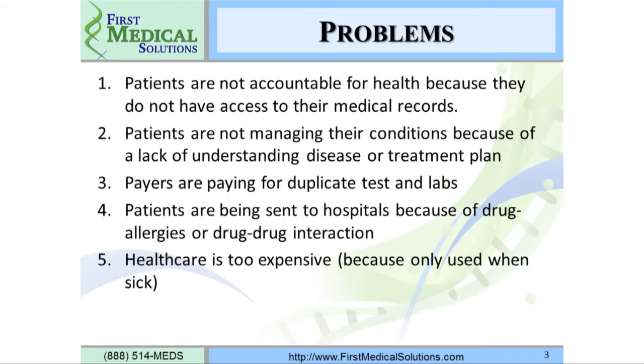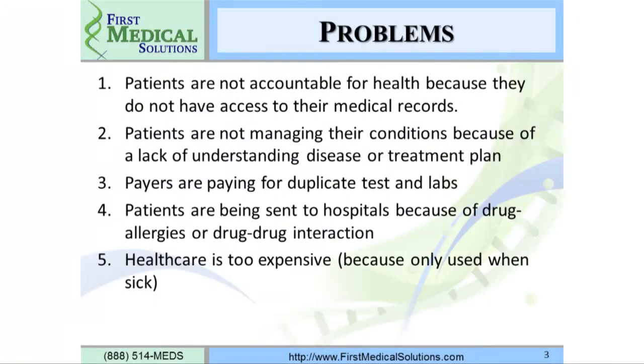Number three: payers are paying for duplicate tests and duplicate lab work. This is where the cost comes into play — it becomes extremely expensive for the payer, the patient, and the system. Number four: patients are being sent to hospitals because of drug allergies or drug-to-drug interactions. A simple real-time system can alert clinicians when a clinician doesn't know what medication a patient is on. Number five: health care is too expensive because it's only used when you're sick.